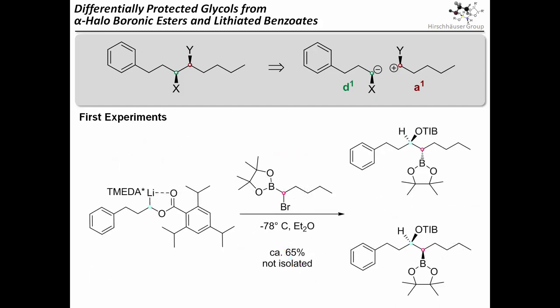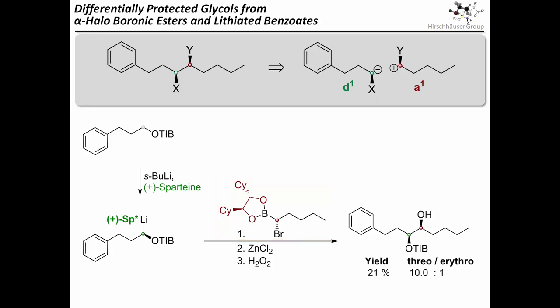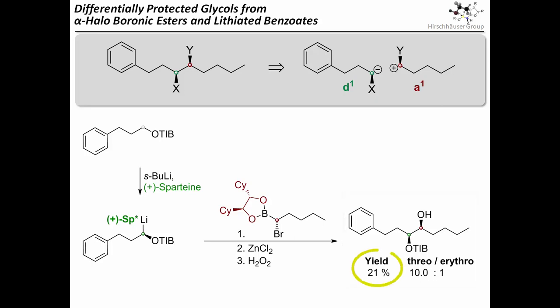So let's go back to topic and see if we can use these triisopropylbenzoates as D1 reagents for our synthetic plan. I will use O-TIPB as a shorthand for triisopropylbenzoates. When we used sparteine for the lithiation and a dicyclohexyl ethanediol boronic ester — or short, DCH boronic ester — we found that the reaction was somewhat capricious. Only after some serious optimization, we got the desired product by assisting the reaction with zinc chloride and oxidizing the boronate with H2O2. While the yield was somewhat disappointing, the diastereofidelity was quite alright.